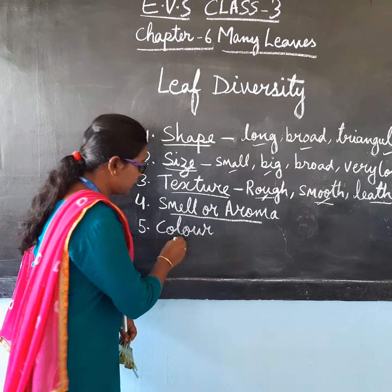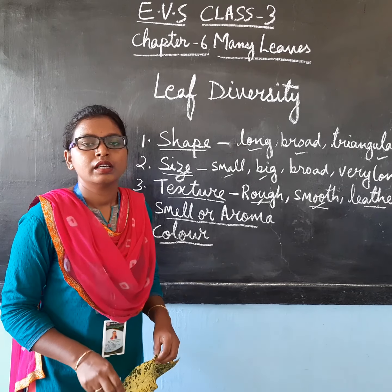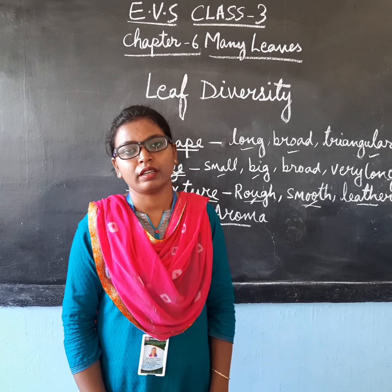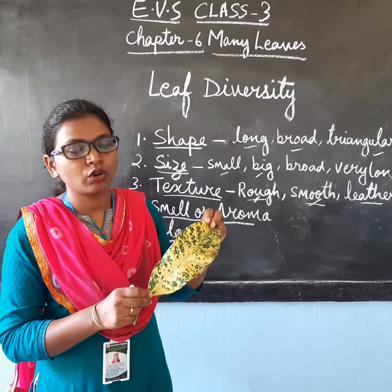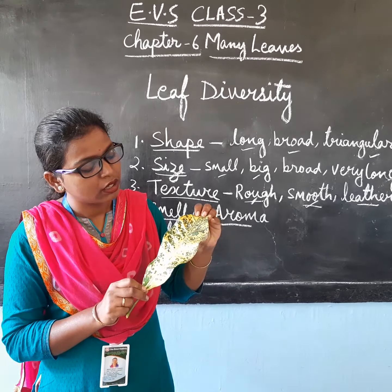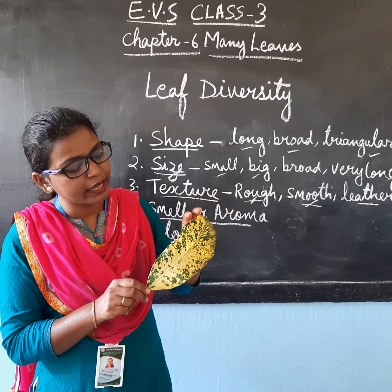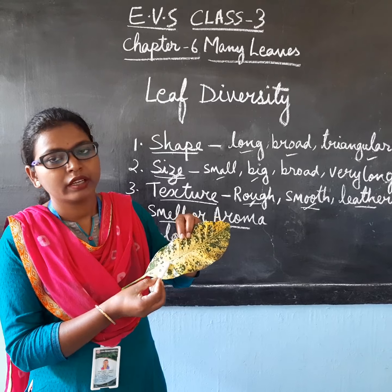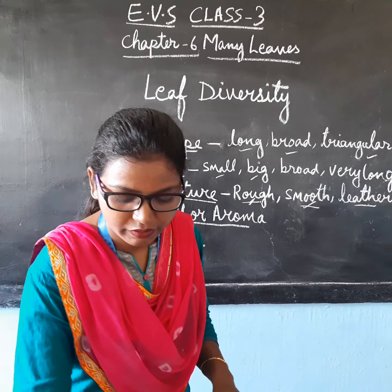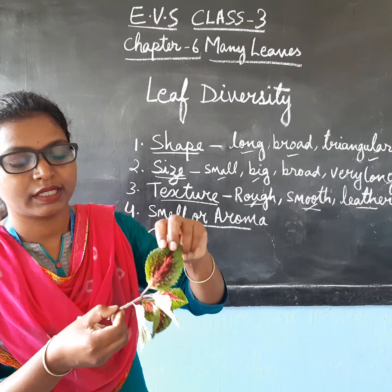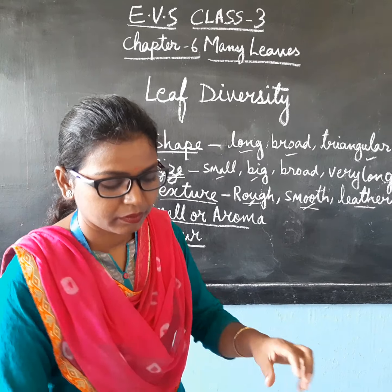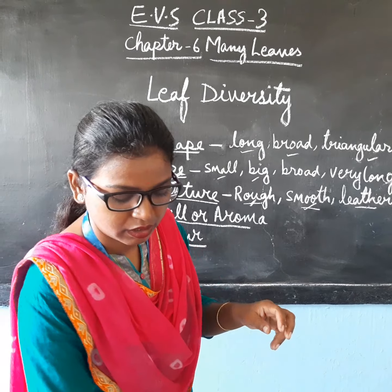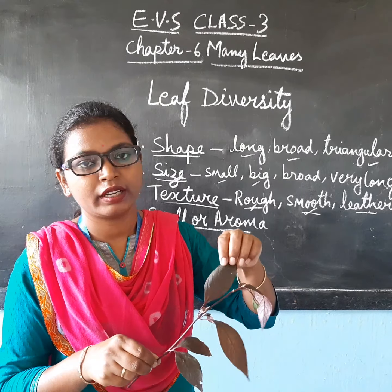Fifth is color. Some of the leaves have different shades of green — like the croton leaf, it has different shades of green, a combination of green and yellow. Some other colorful leaves I have brought here — you can see these leaves are not green in color.